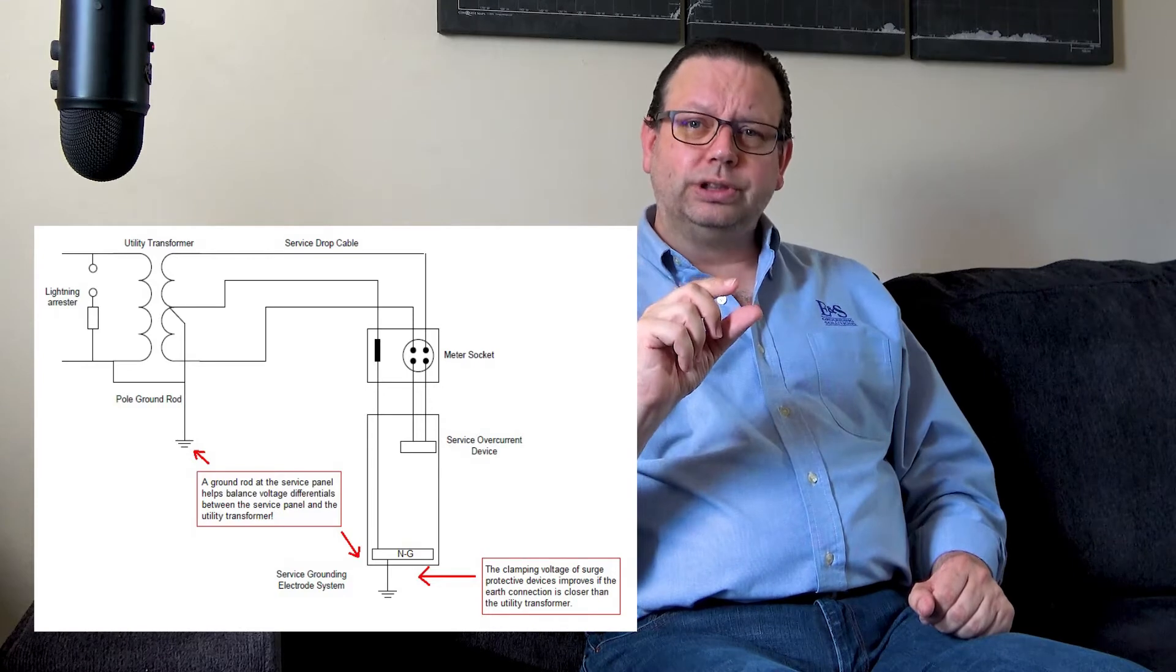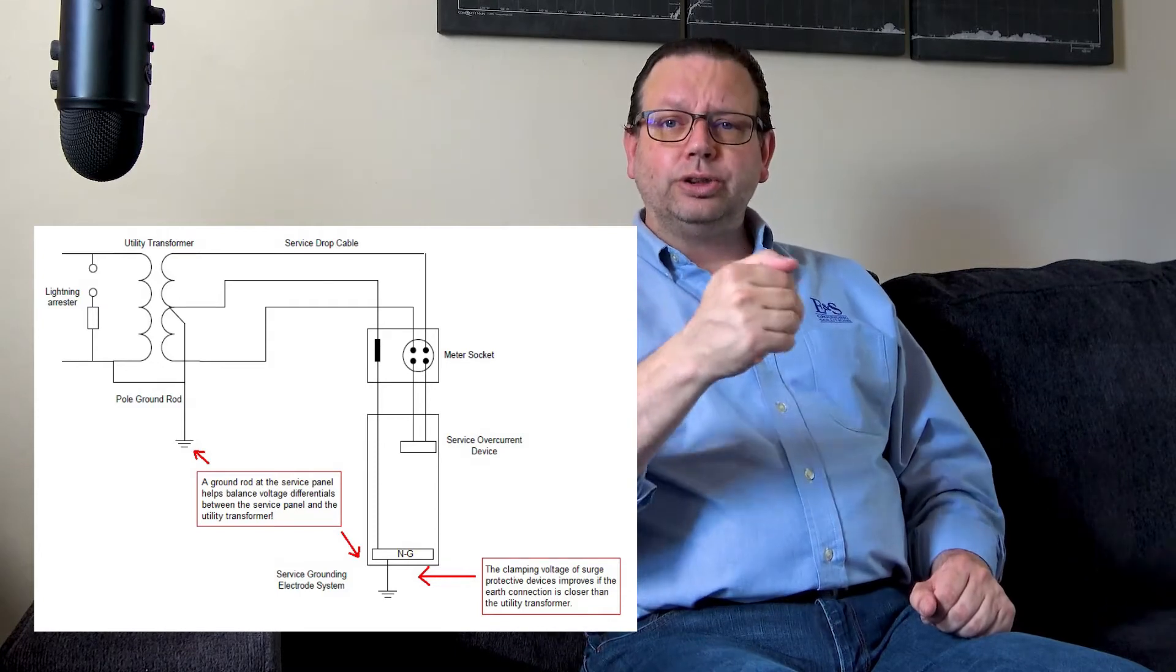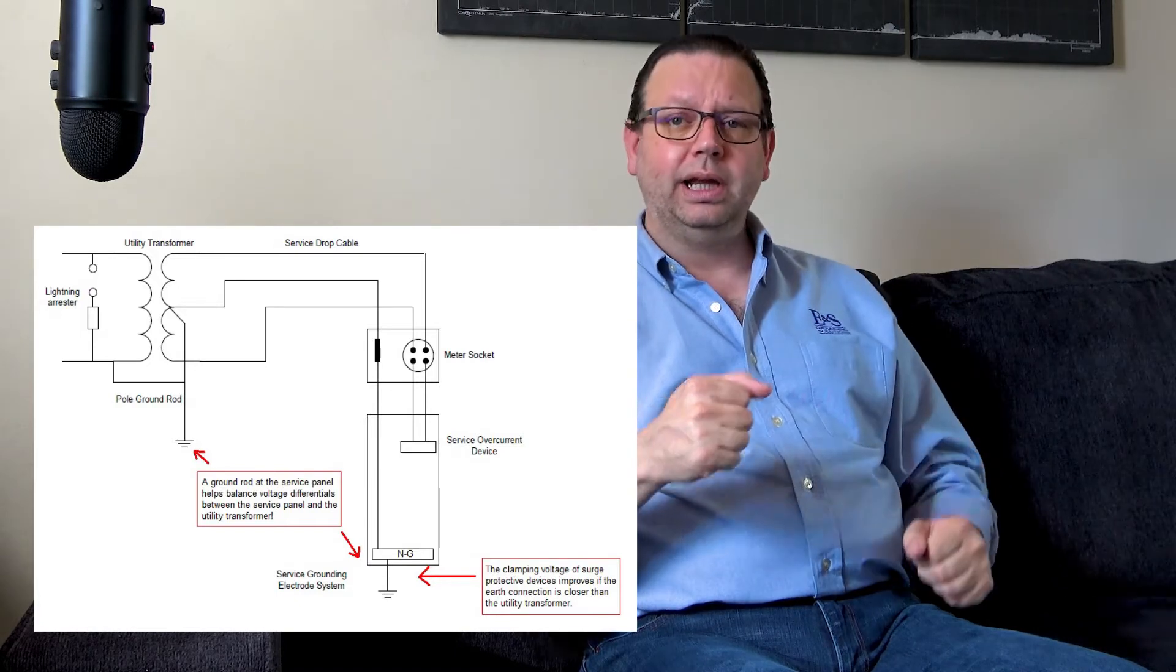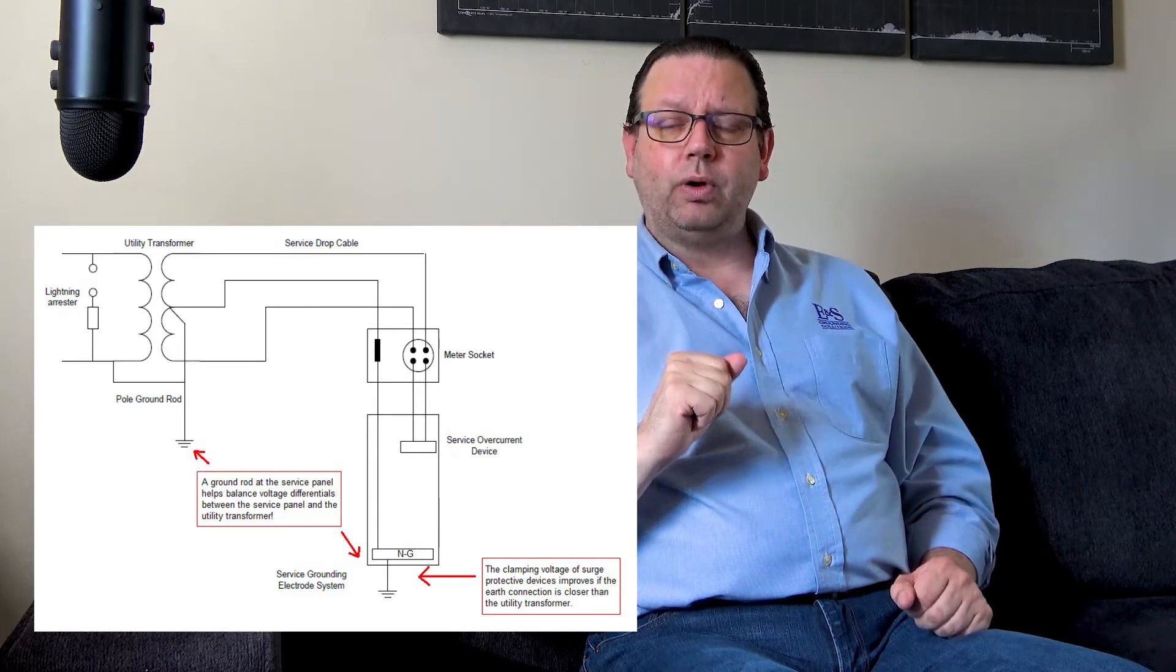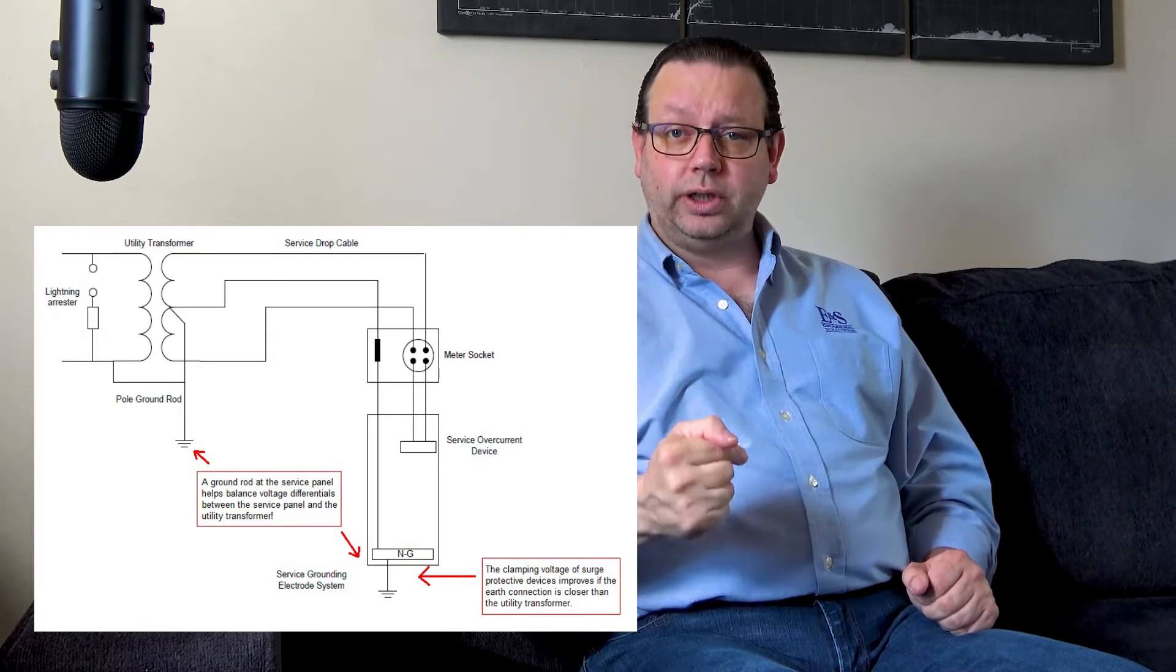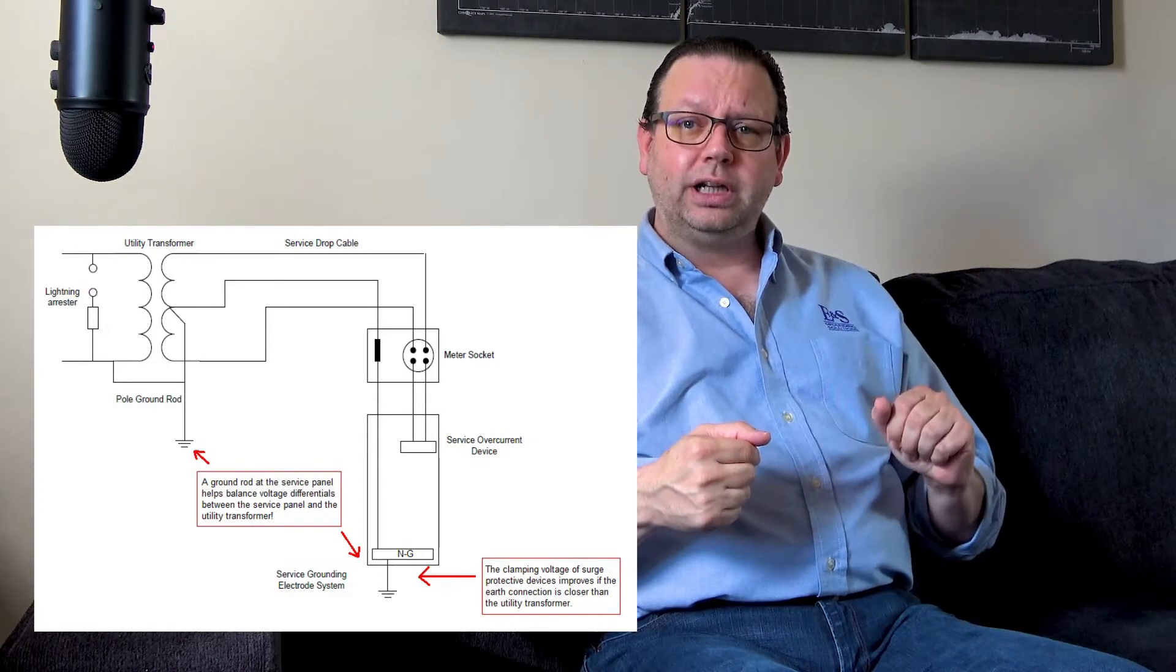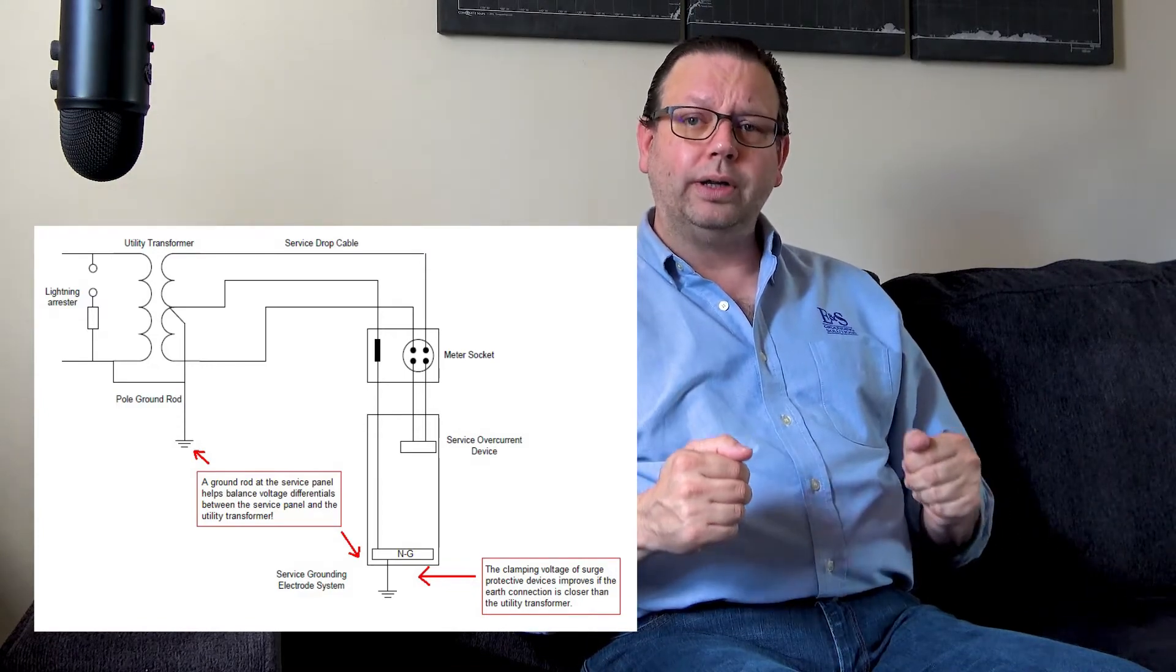Many of the reasons why is it has to do a lot with the operation of surge protection devices. So the clamping voltages of a surge protection device are better the closer that earth connection is. It also helped to balance the voltage differentials between the transformers, which can be located quite some distance away, and your home. It also, when the high side of that transformer faults, it helps to make sure that that fault is cleared back to the utility company's circuit breakers.